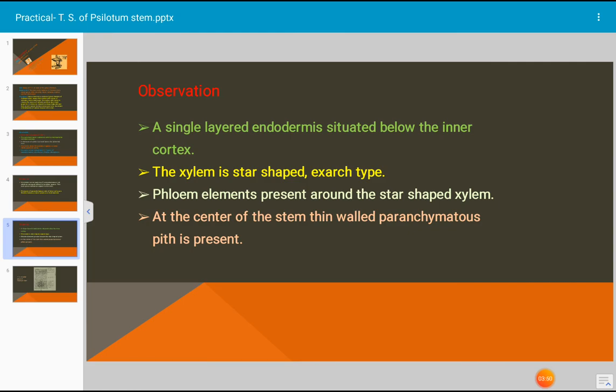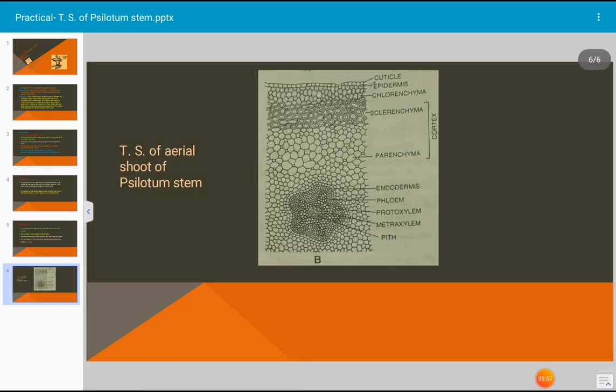At the center of the stem, thin walled parenchymatous pith is present. This is the photograph or figure of transverse section of stem of Psilotum or shoot of Psilotum. This is all about internal structure or transverse section of stem of Psilotum.